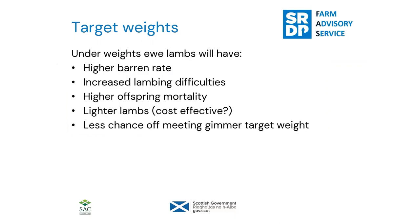Why do we want those target weights? Hogs at lower weight are ultimately less mature — it's not just age but also the proportion of adult weight when an animal comes into puberty. We'll see higher barren rates. Less well-grown ewe lambs will have lower pelvic sizes, increased lambing difficulties, trauma to offspring, increased mortality in the offspring and in the ewe hogs. Less well-grown hogs will also produce lighter lambs, putting the cost-effectiveness of the whole system into question, and they're less likely to meet target weight as gimmers either.